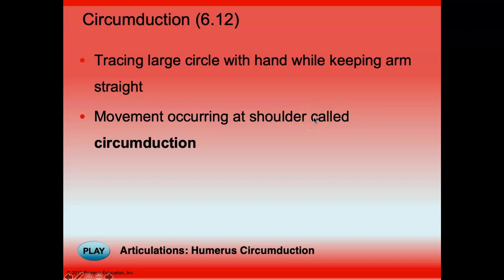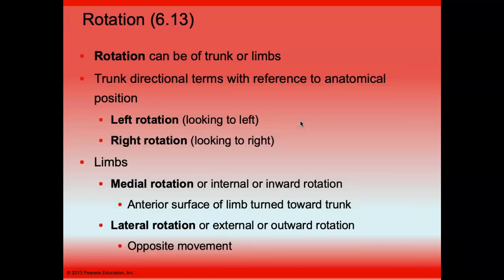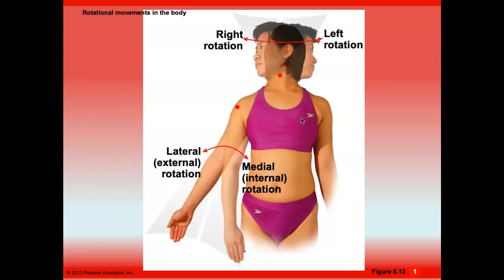If you move your arm in a circle at the shoulder, it is called circumduction. Rotation involves turning a body part — for example, going from anatomical position and rotating the palms in the opposite direction is medial rotation.